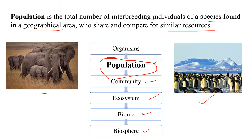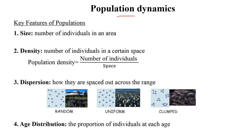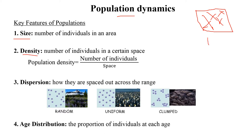Now, the dynamics of population. There are a few key features of a population. The first is size — how many individuals are present in a particular area. The second is density — the total number of individuals per unit area. For example, if there are 1,000 tigers in 100 square kilometers, the density is 1,000 divided by 100 = 10 tigers per square kilometer.